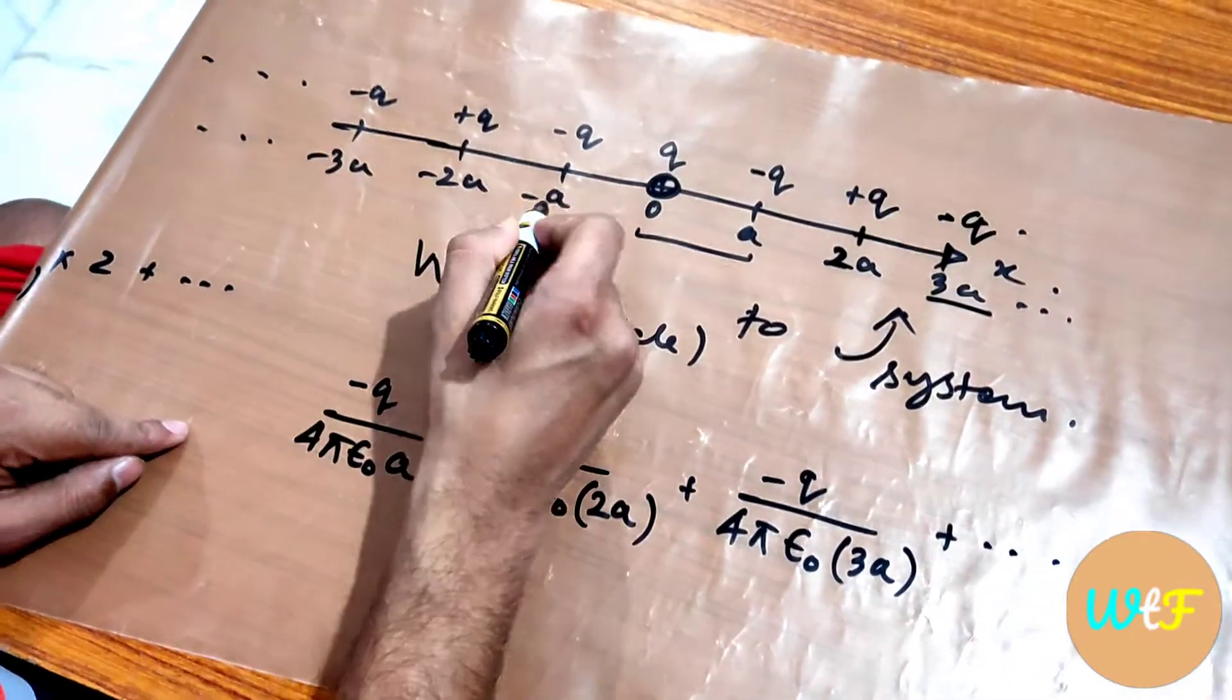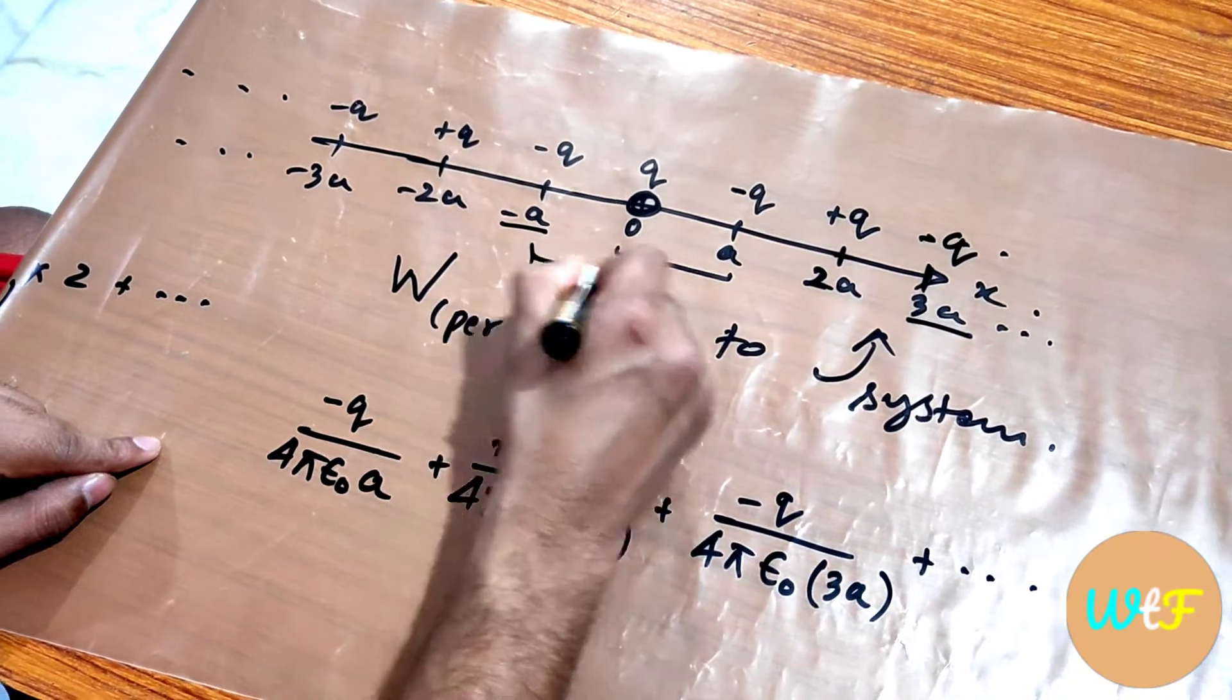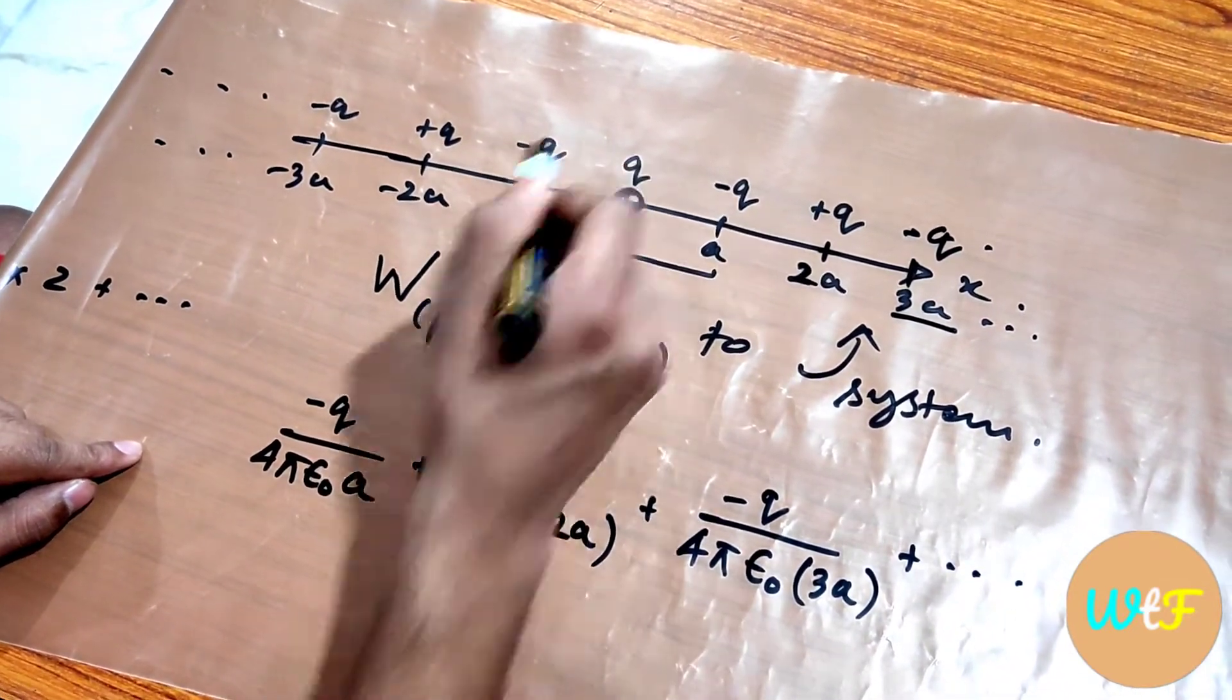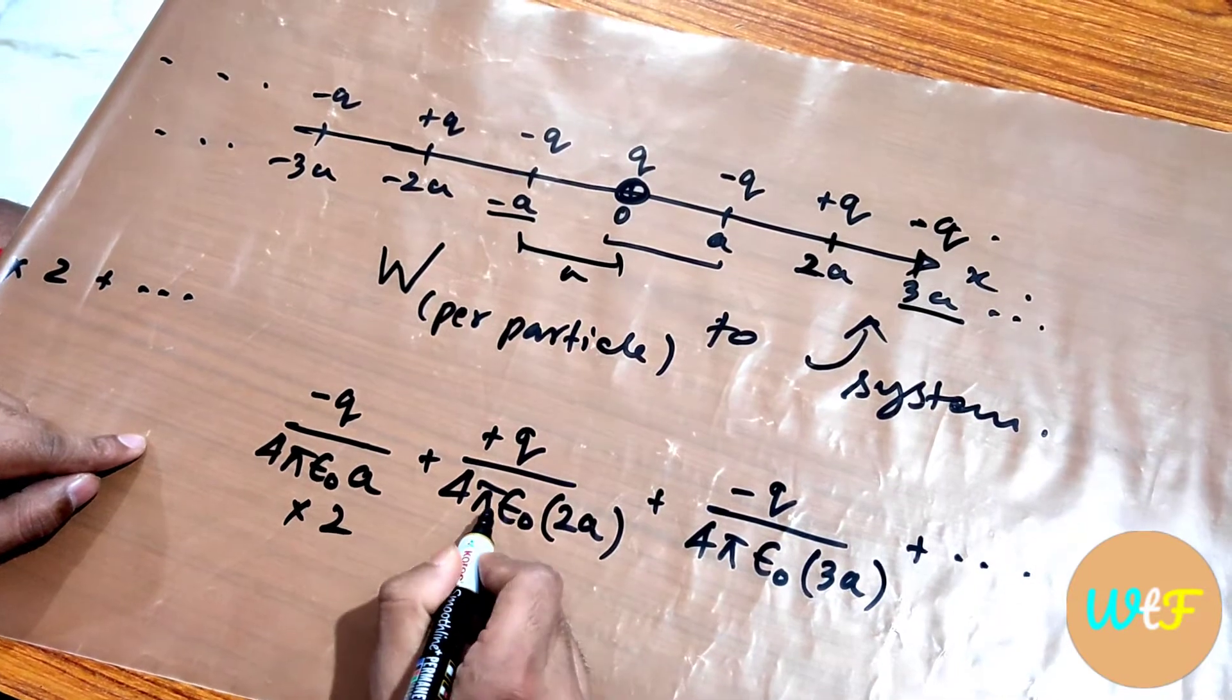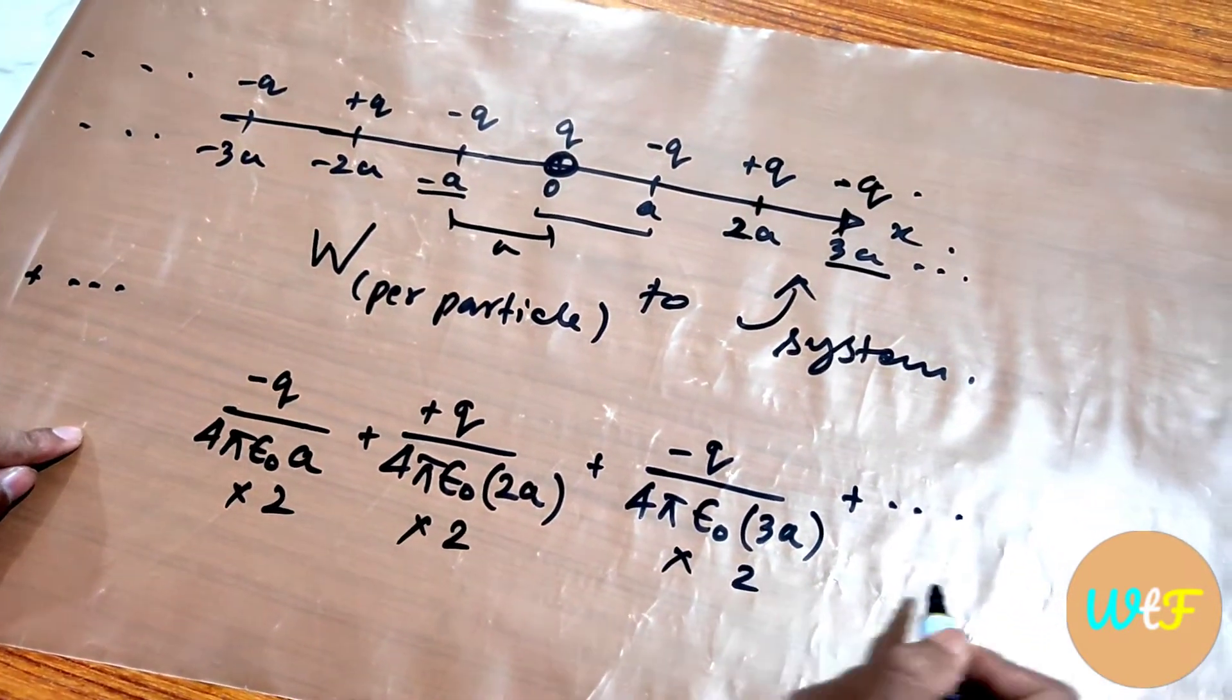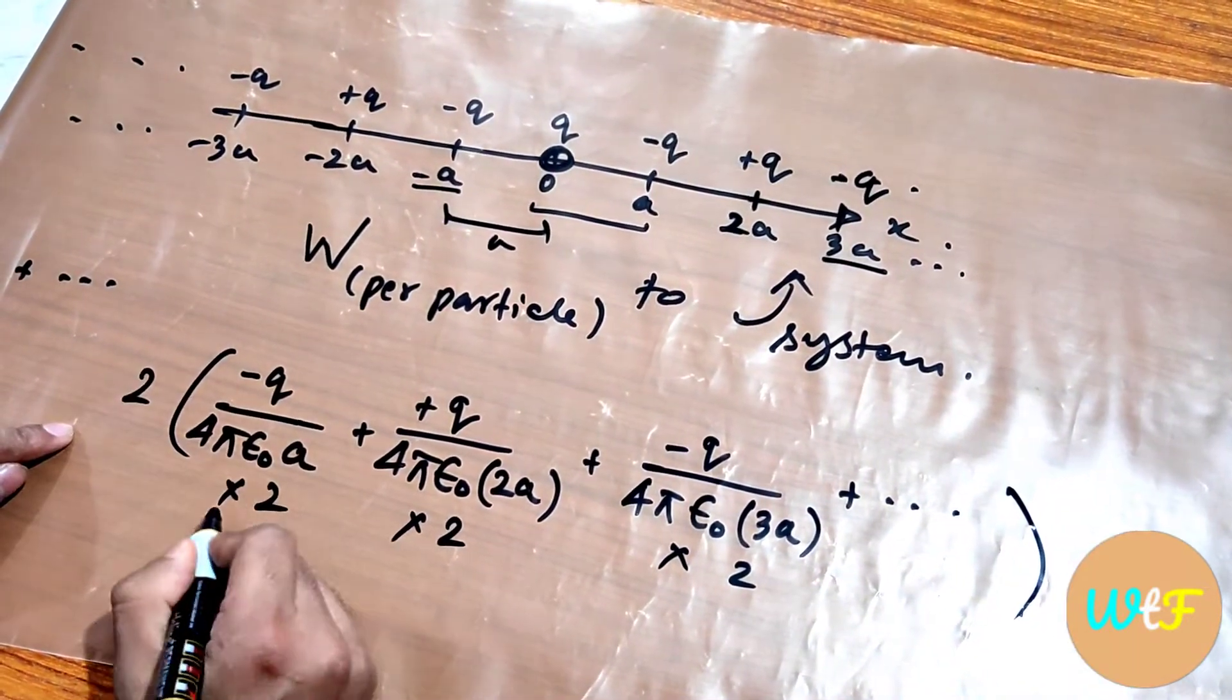Similarly is the case here, at minus a, which is at a distance of a from origin, will have minus q into 4π ε₀, the same number, so we can multiply it by 2. Similarly we can multiply this by 2, multiply this by 2 and so on. We can take it like this, right?